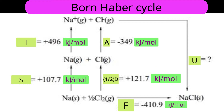After obtaining one chlorine atom, we need to form the chloride ion Cl⁻, meaning the atom gains an electron. This is called electron gain enthalpy or electron affinity, represented by symbol A. When an atom accepts an electron, energy is released — it is exothermic. The enthalpy change for electron gain by chlorine is −349 kJ/mol.